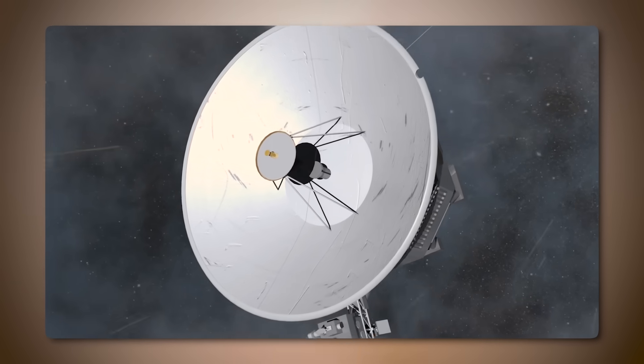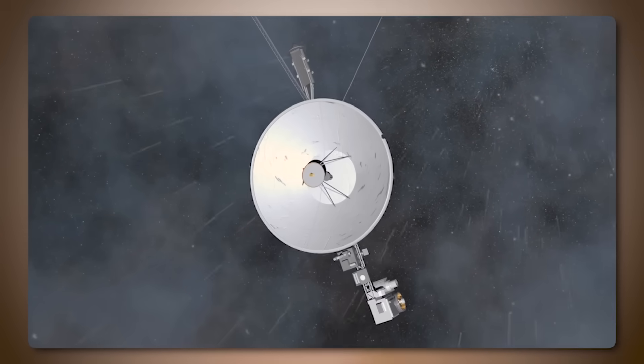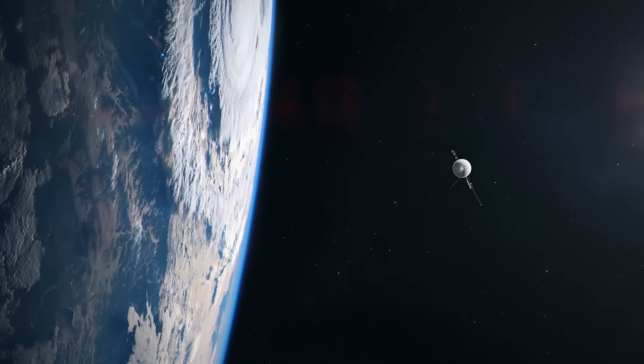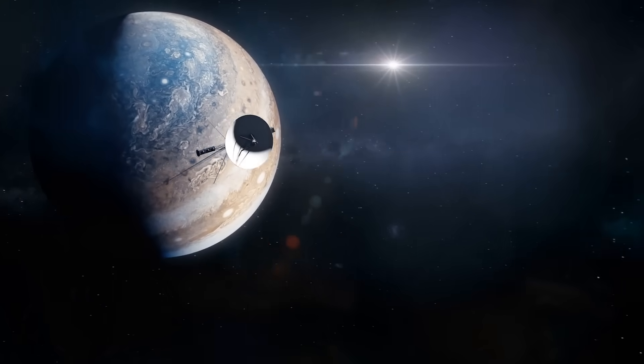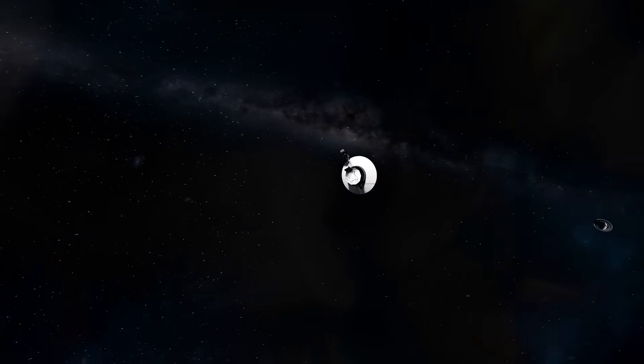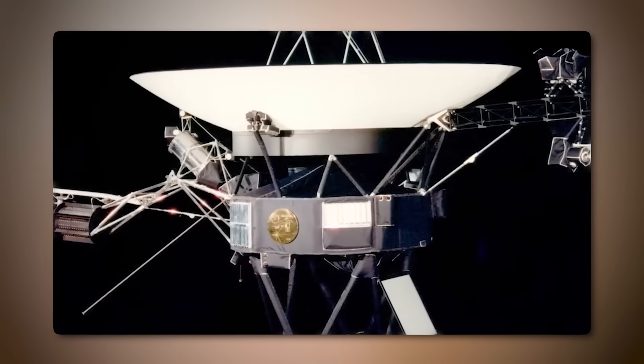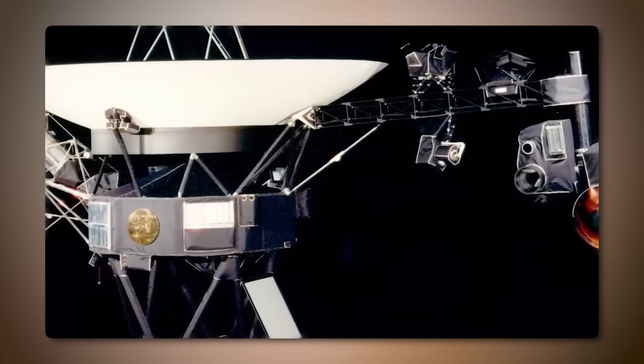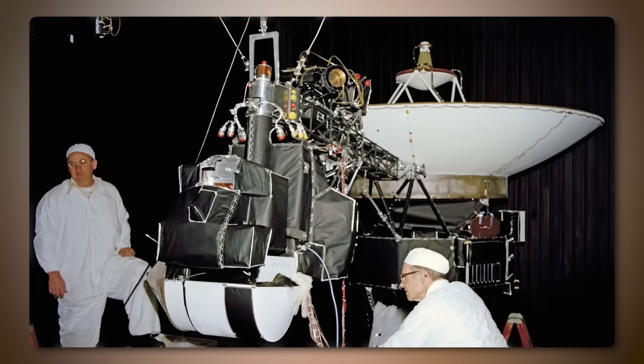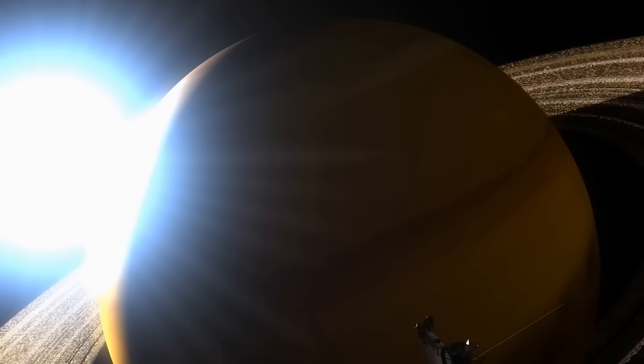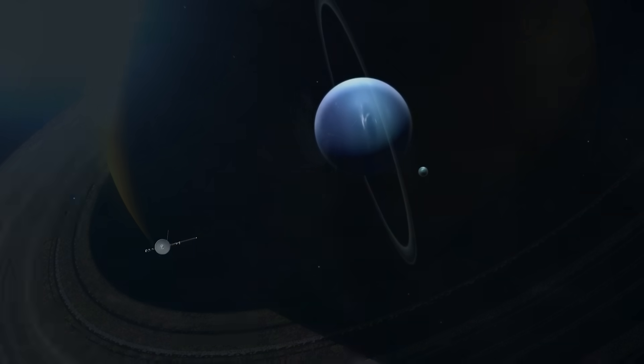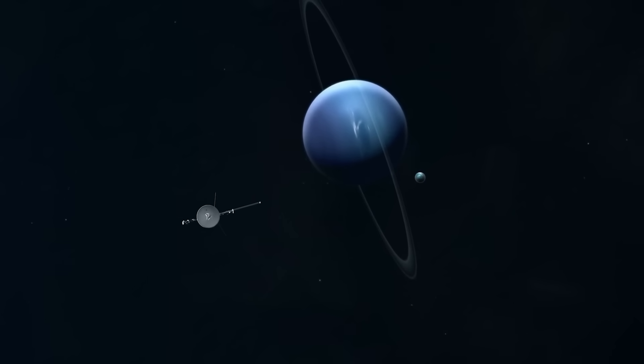Voyager 1 is the farthest human-made object from Earth, while Voyager 2 took a unique trajectory that allowed it to encounter Uranus and Neptune. Both probes carry messages for potential extraterrestrial intelligence, known as the Golden Records, 12-inch gold-plated phonograph records containing sounds and images representing life on Earth, alongside greetings in 55 languages. These records serve as time capsules, holding snapshots of life on Earth for any intelligent civilization that may eventually encounter them.